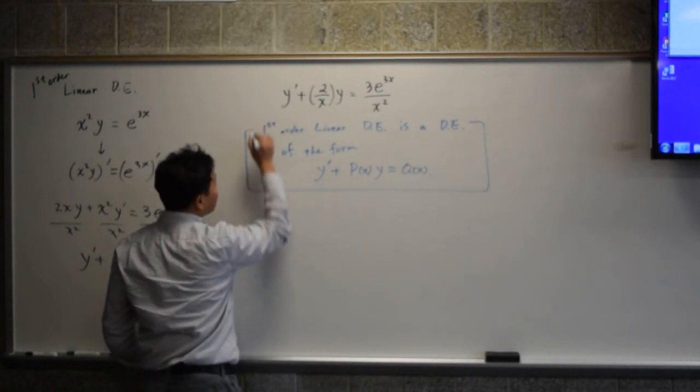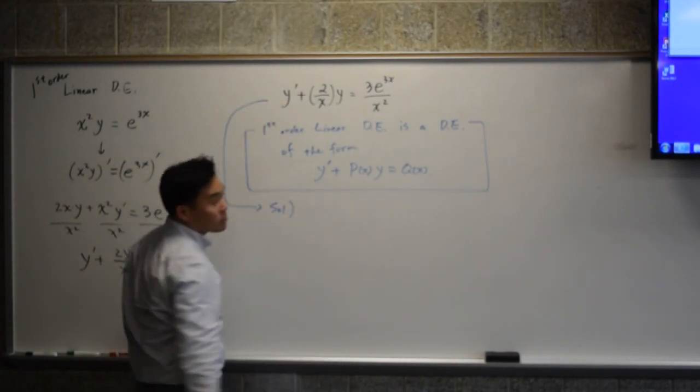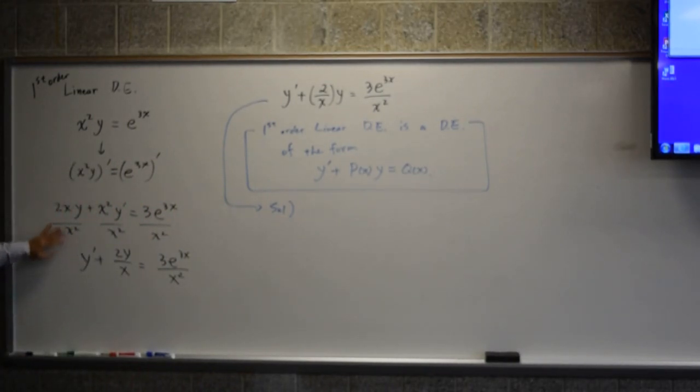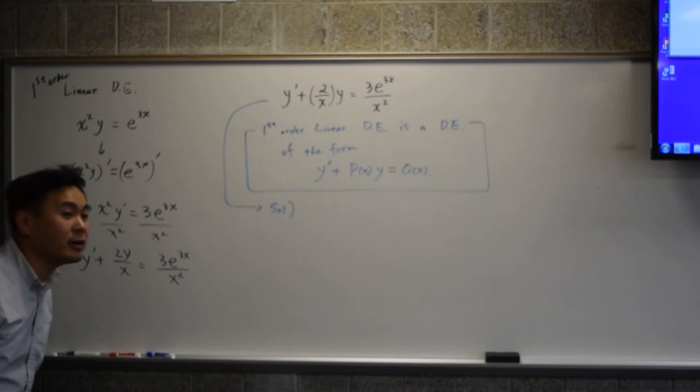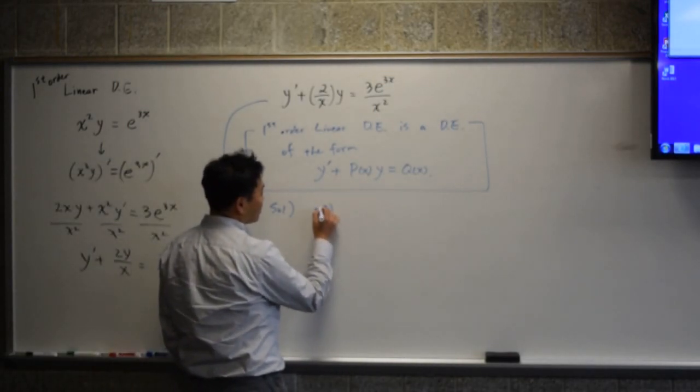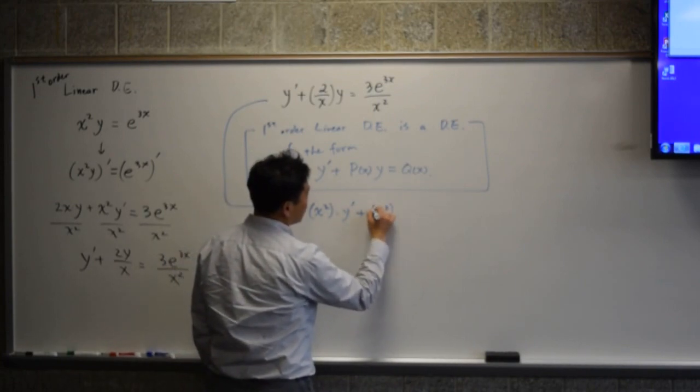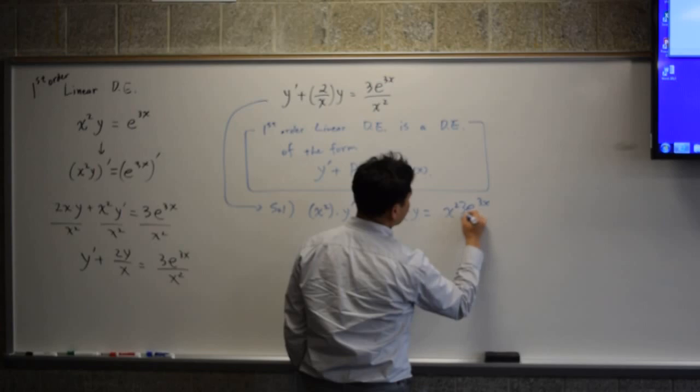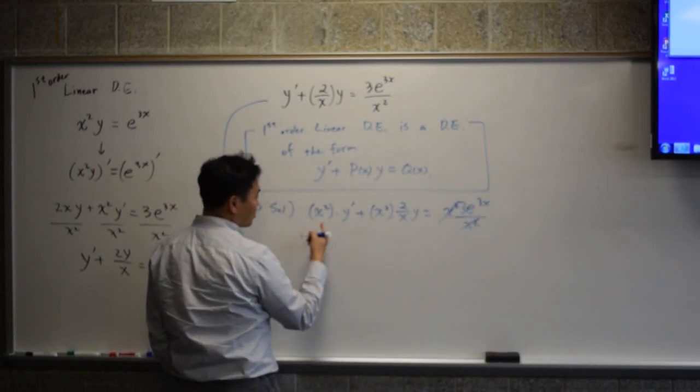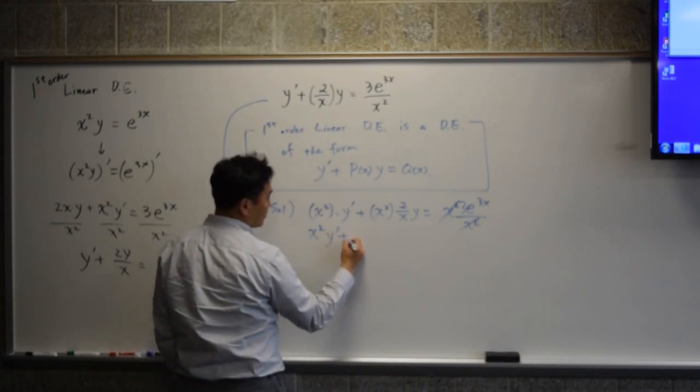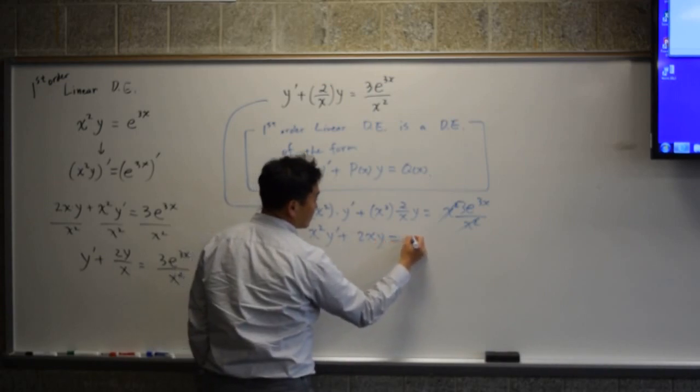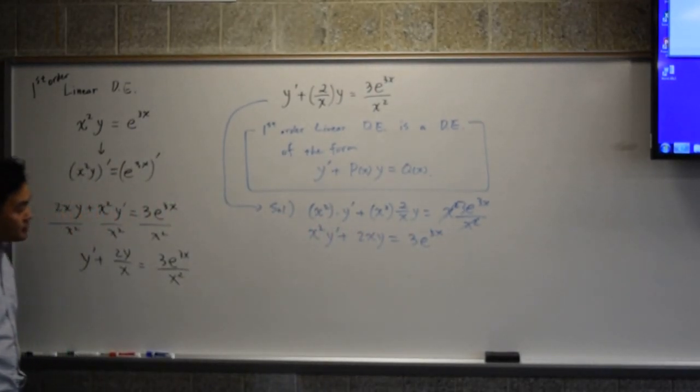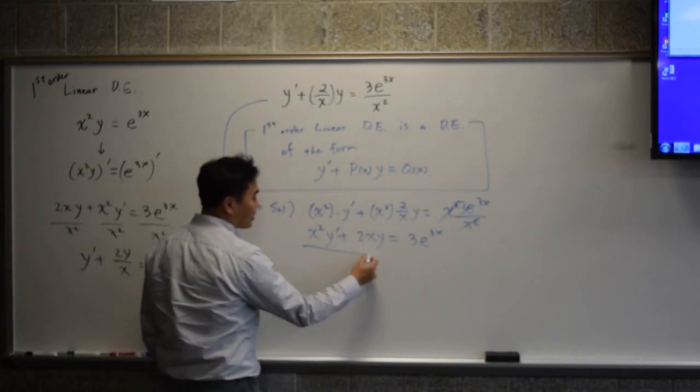So how would you solve this? If this was a question, what's the solution? First step, what do you do? Just do the opposite, right? What do you do? Multiply by x squared. You would multiply both sides by x squared so that some of them cancel, some of them simplify.